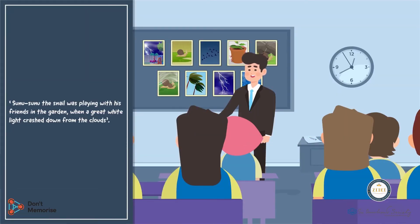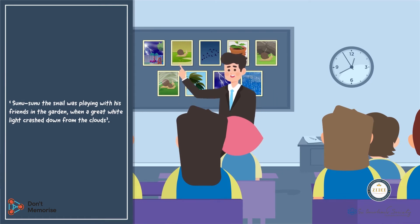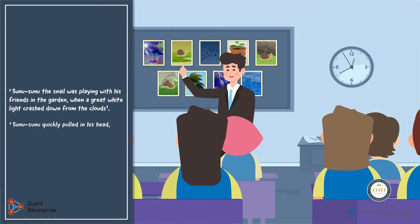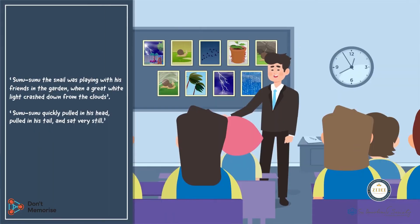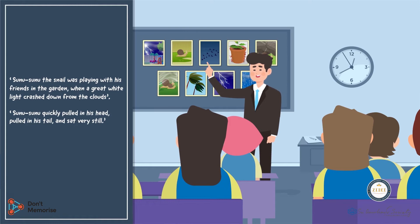Next up in the sequence will be the picture card of a snail sitting very still. Point towards it and say: Sunu Sunu quickly pulled in his head, pulled in his tail, and sat very still. Then point towards the picture card of the dark sky and the flying crows and say: The sky grew dark and the crows flew past.